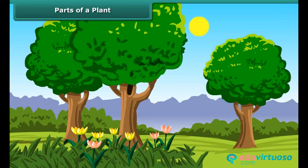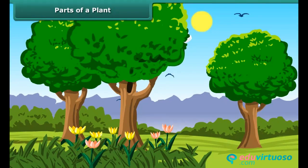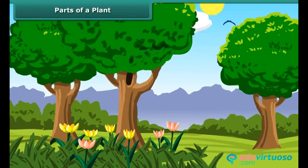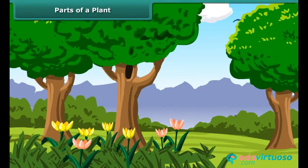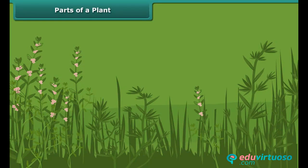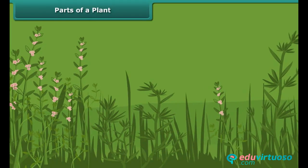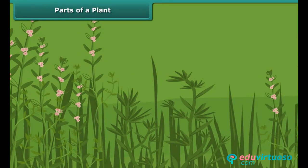Plants are living organisms that make life possible on earth. Plants provide fruits, vegetables, flowers, wood, and medicines. Different parts of different plants are used by human beings and animals for their existence.